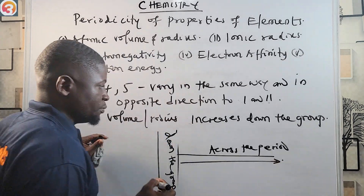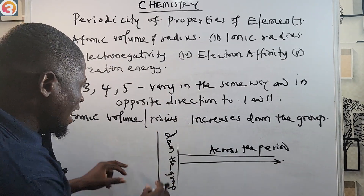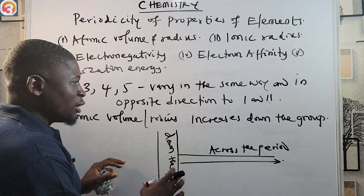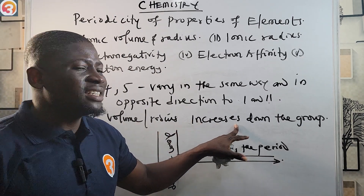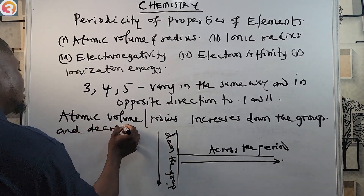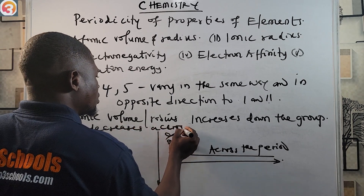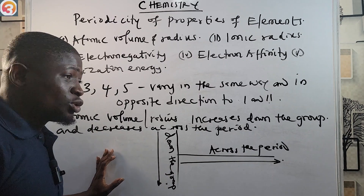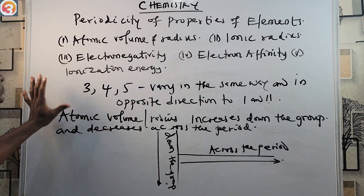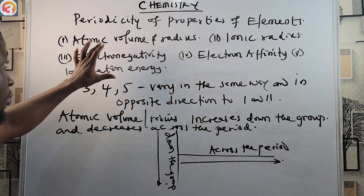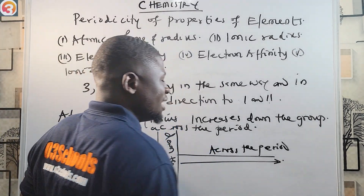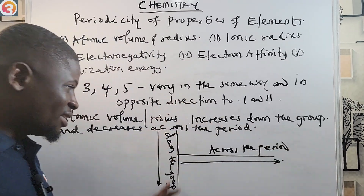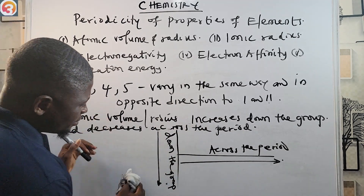Atomic volume and radius increases as you go down the group, but it decreases as you go across the period. So: atomic volume and radius increases down the group and decreases across the period. You should never miss any question about periodicity of properties of elements with this rule.